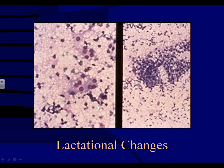You're still going to see myoepithelial cells in the background, the darker smaller ones — a good feature supporting benignancy. Because of the looseness of these groups, lactational change can be a potential pitfall for breast cancer. But a breast cancer is going to have much more cellular anaplasia, many more individual cells, very high N/C ratio, and not this amount of cytoplasm.